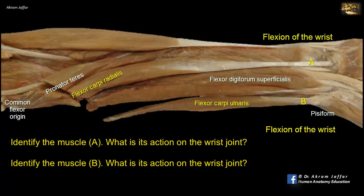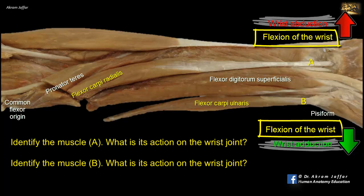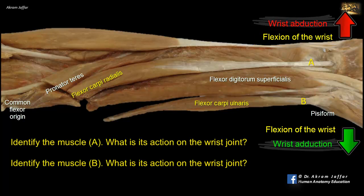The carpal flexors also abduct or adduct the wrist depending on which side of the metacarpals they are inserted to. Flexor carpi radialis abducts or radially deviates, and flexor carpi ulnaris adducts the hand. When flexor carpi ulnaris and flexor carpi radialis act together, they flex the carpus, and abduction cancels out adduction. When the radial carpal flexor works together with extensor carpi radialis, flexion cancels out extension and only abduction remains, since both muscles share a common action of abducting the wrist. The same is true for flexor and extensor carpi ulnaris when they act together — they adduct the hand because flexion cancels out extension.